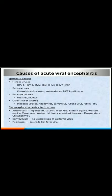The causes of acute viral encephalitis are divided into sporadic causes and geographically restricted causes. The sporadic causes include herpes virus, enterovirus, paramyxovirus, and other rare causes such as influenza virus, adenovirus, parvovirus, rabies. Various geographically restricted causes include arbovirus, bunyaviruses, and reovirus.